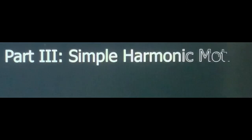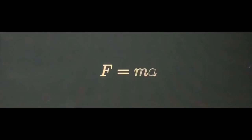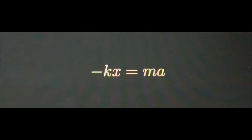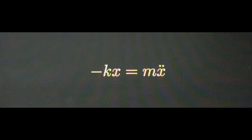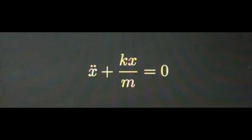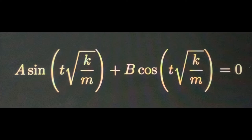Part 3: Simple Harmonic Motion. We all know the equation F = ma — that is Newton's second law. Here, F is equal to −kx, and a is equal to the second derivative of position x. So we can substitute in: mẍ = −kx. This is a second-order differential equation, which can be rewritten, and the solution to the differential equation will look like a combination of sine and cosine terms, where a and b are constants depending on the initial conditions.